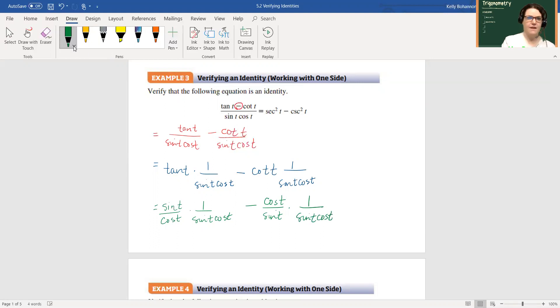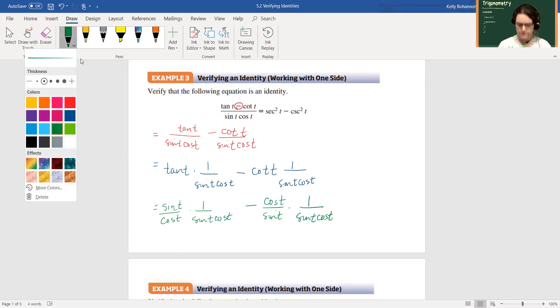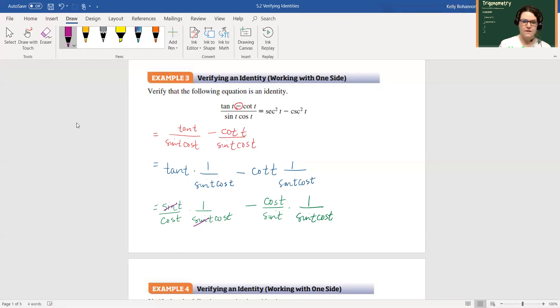And then we can cancel anything that needs to cancel. So that would be sine t's cancel here and cosine t's cancel here, or they don't really cancel, they become one. So remember this is multiplication between these.